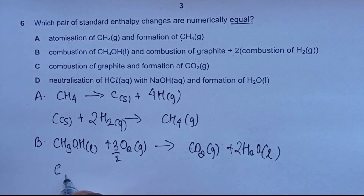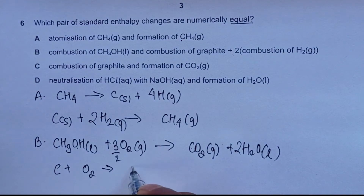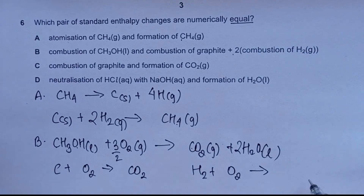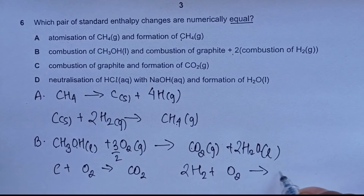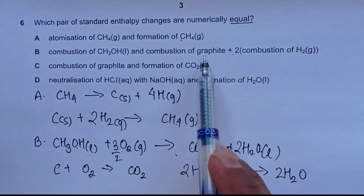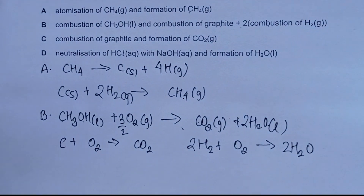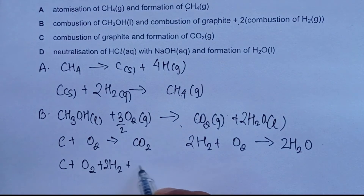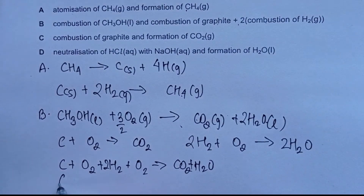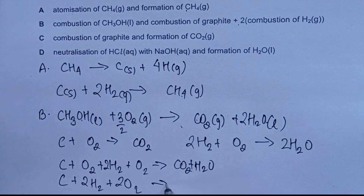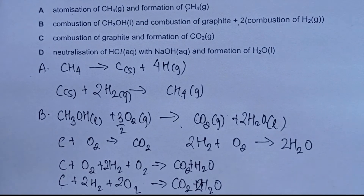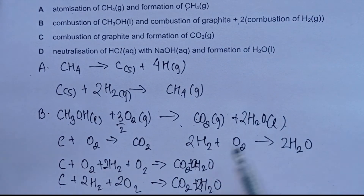Combustion of graphite: C + O₂ → CO₂. Twice the combustion of H₂: 2H₂ + O₂ → 2H₂O. Adding these together gives C + 2H₂ + 2O₂ → CO₂ + 2H₂O. Both equations produce one mole of CO₂ and two moles of H₂O on the product side, so the products match.